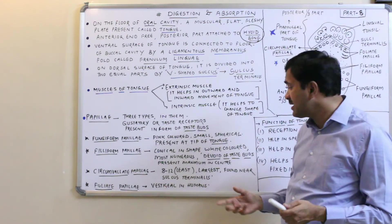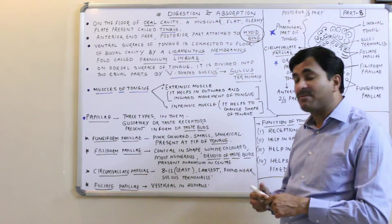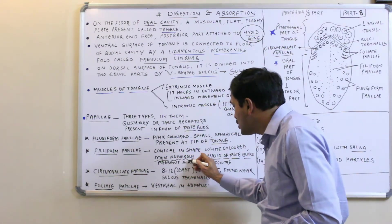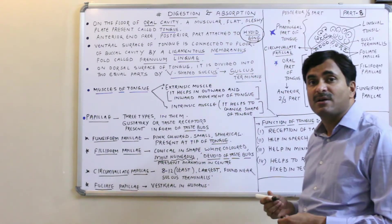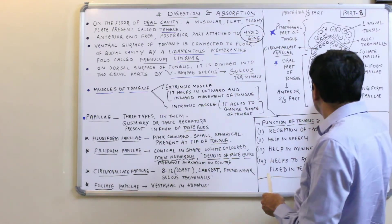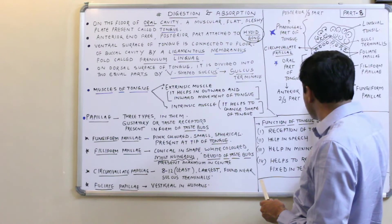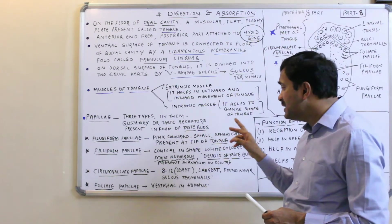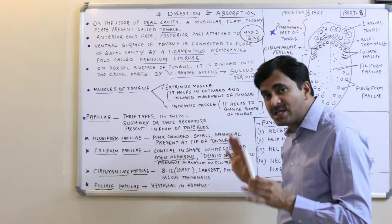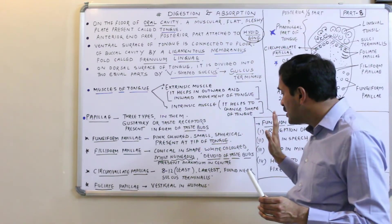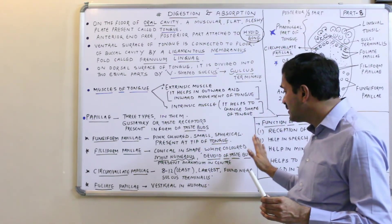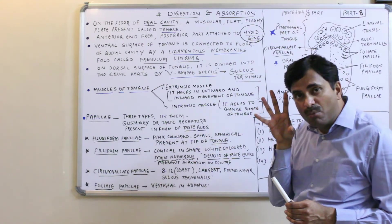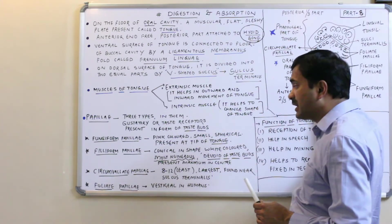Filiform papillas are thread-like, white colored, and are the most numerous type of papillas found on the tongue. These dot-like structures represent the filiform papilla. However, these papillas are devoid of any taste buds and are present in greater quantity at the center of the tongue.